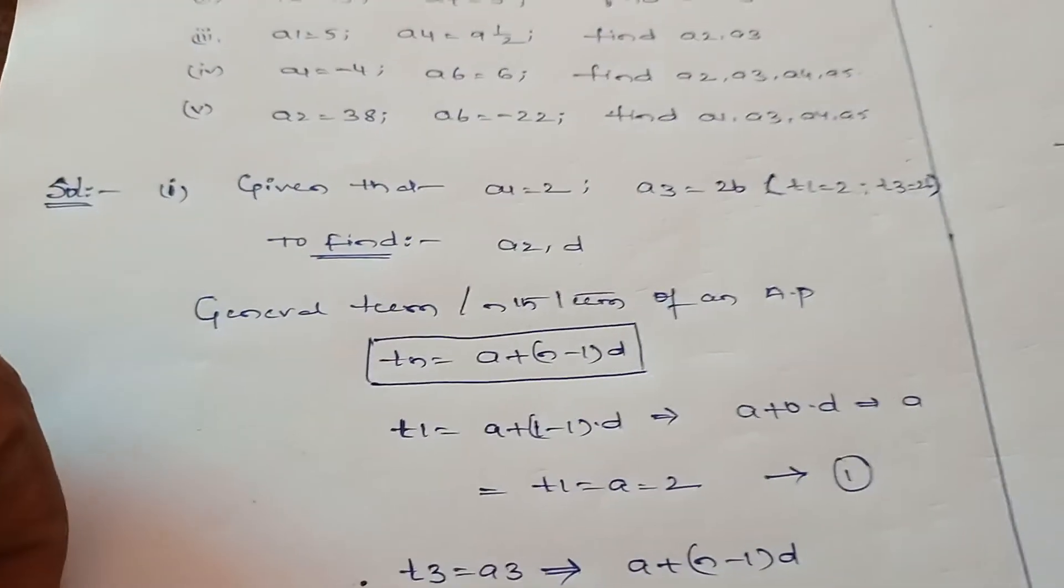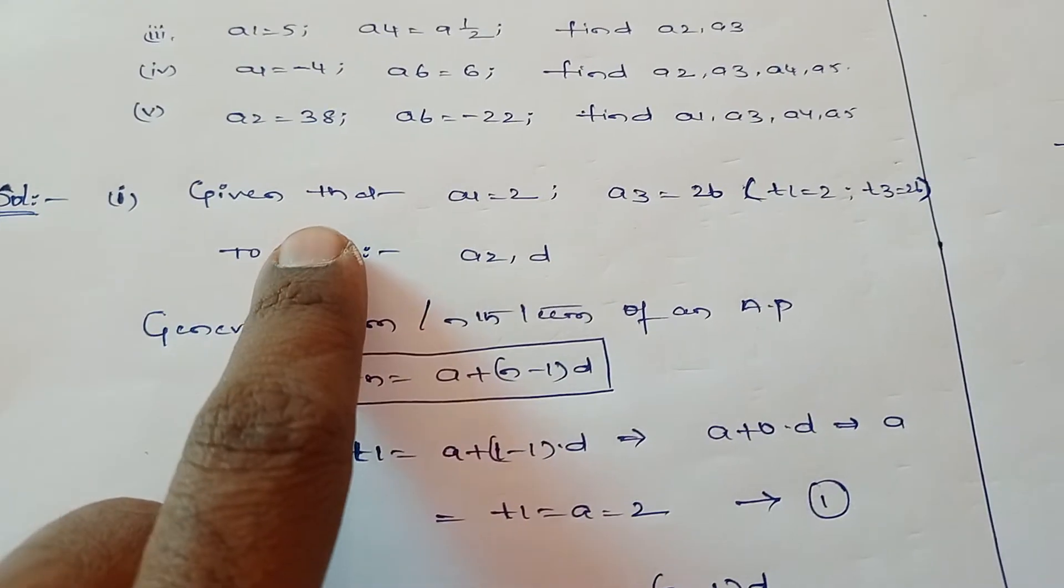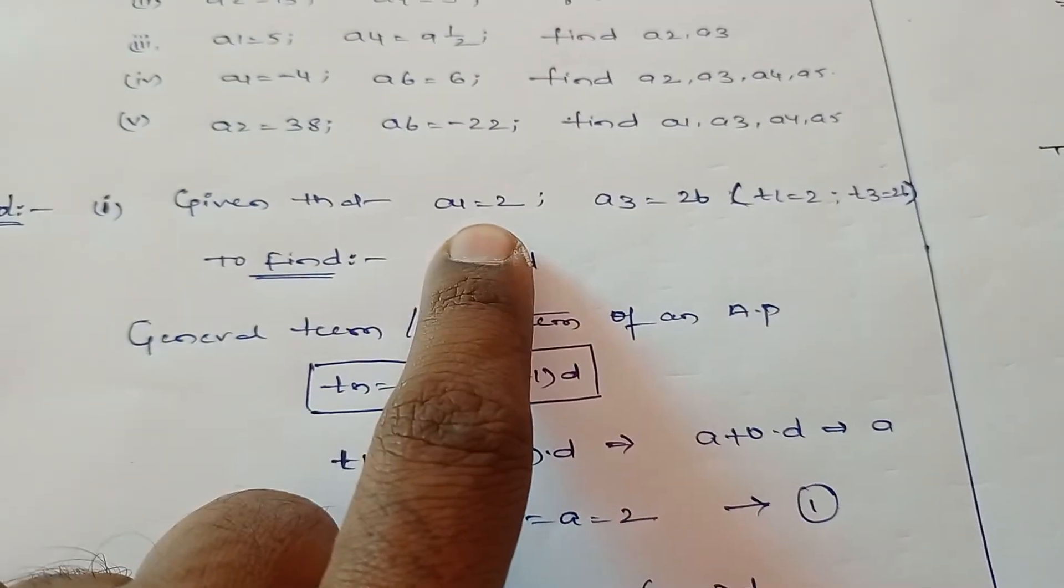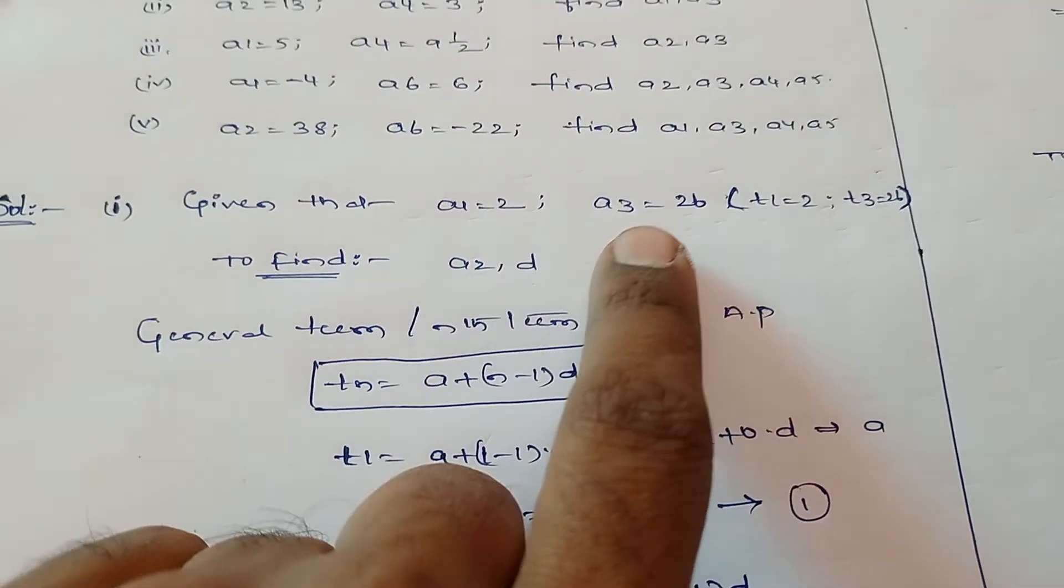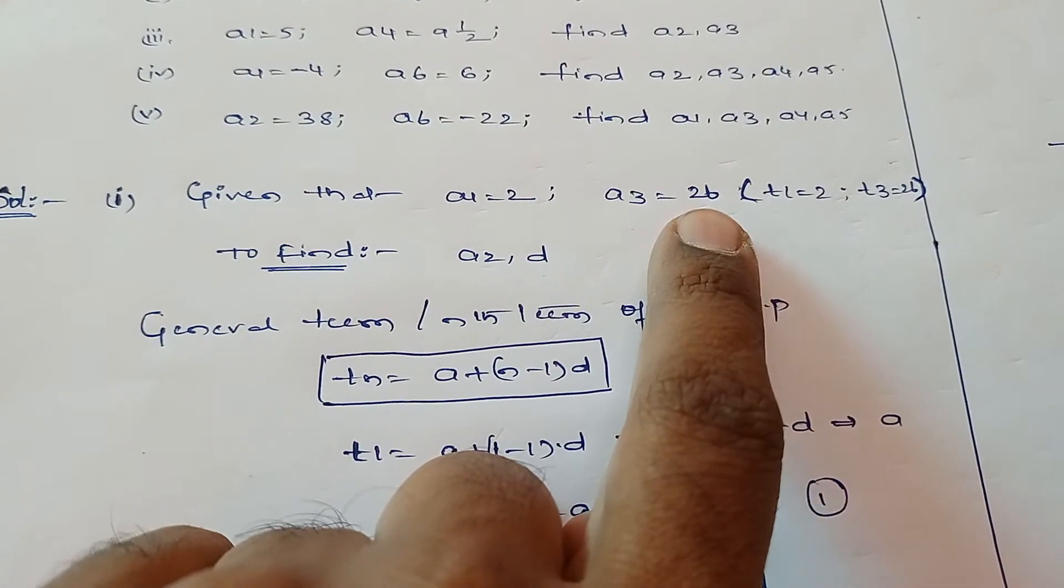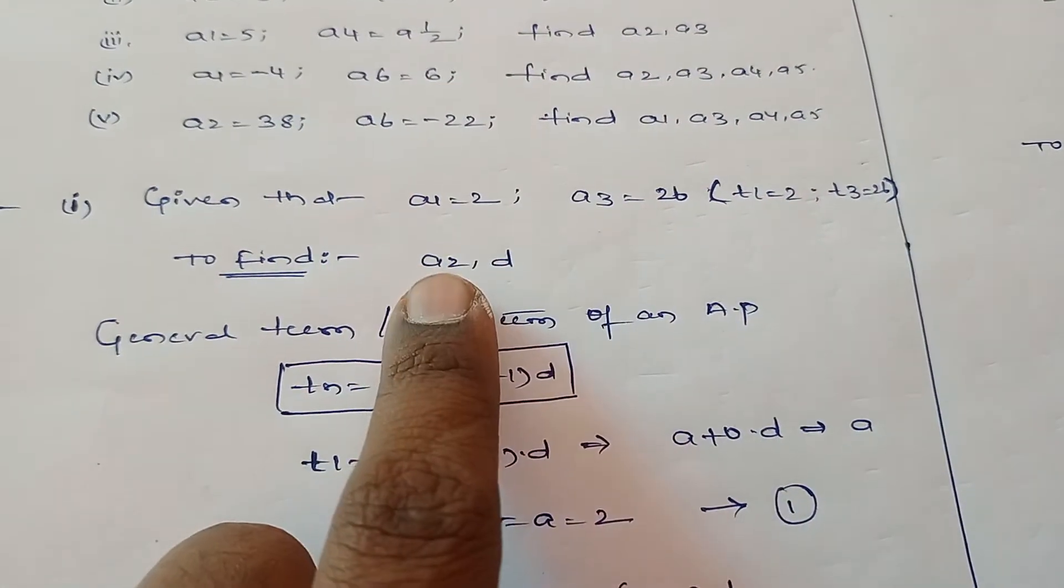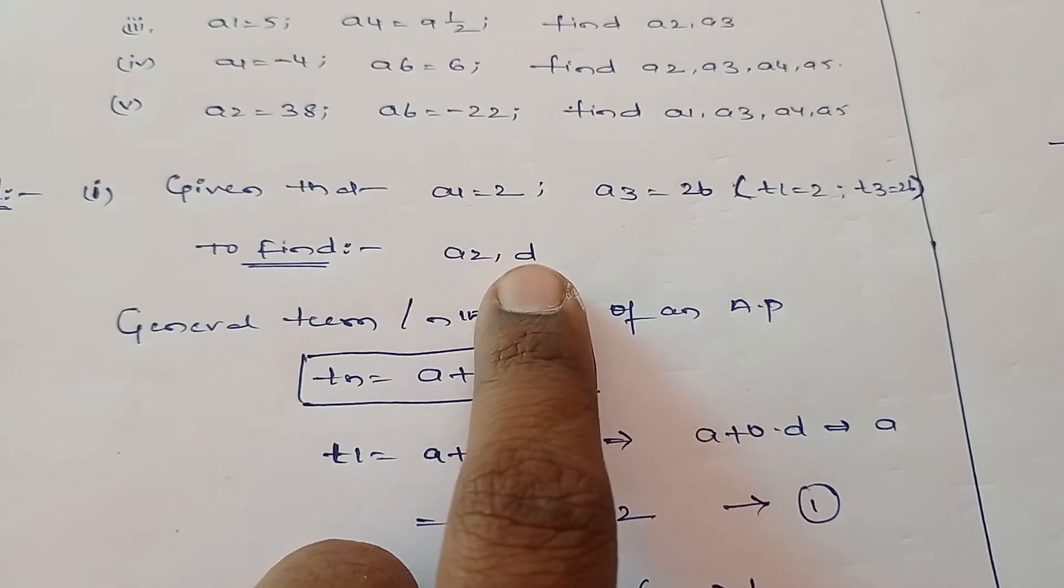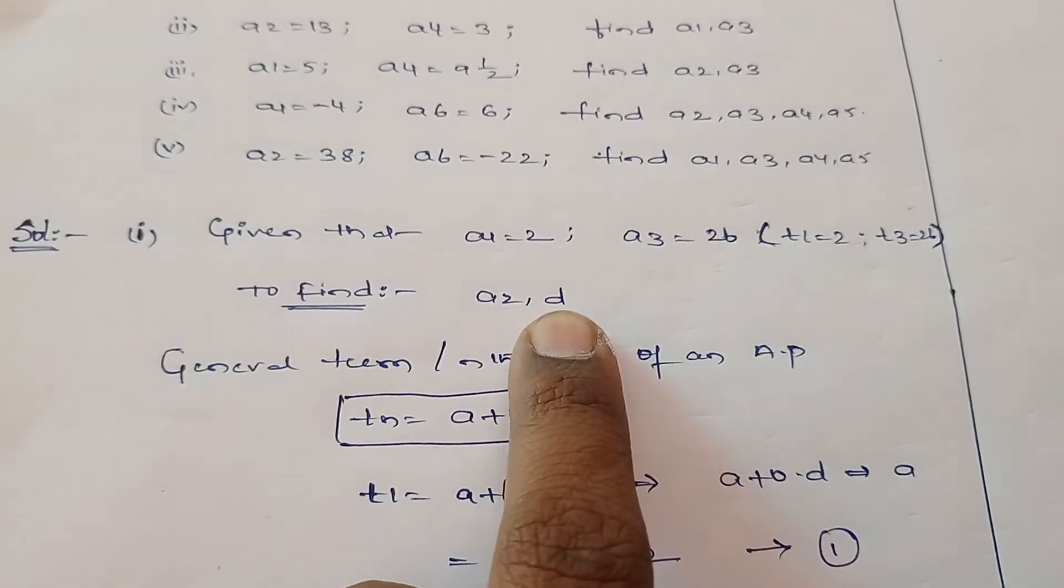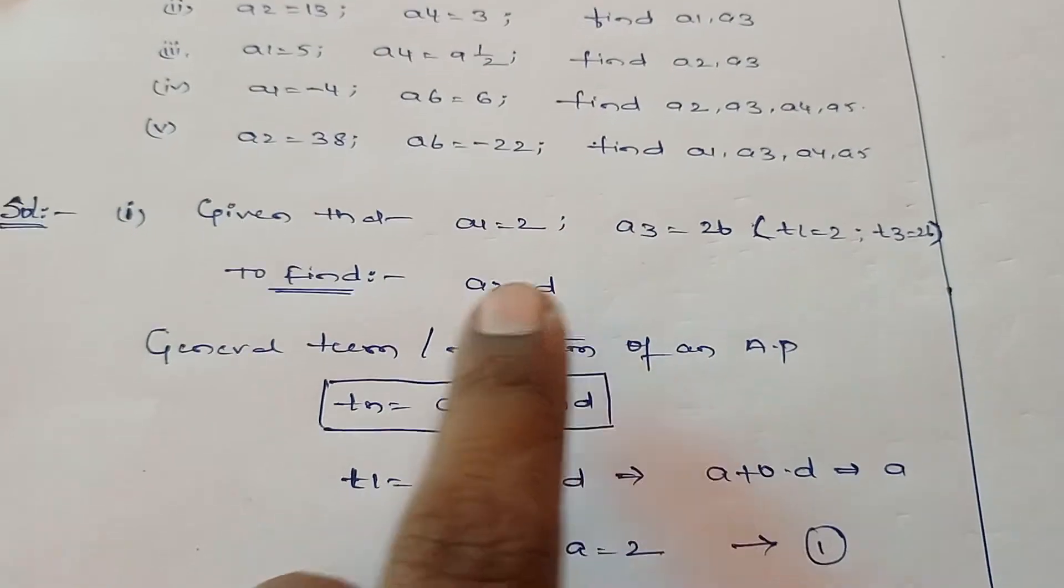Let's start the sum. First, mention what is given in the question. Given that first term t1 or a1 equals 2, t3 or a3 equals 26. They are asking to find the second term. Your d value is not there, so we need to find the d value also, the common difference.